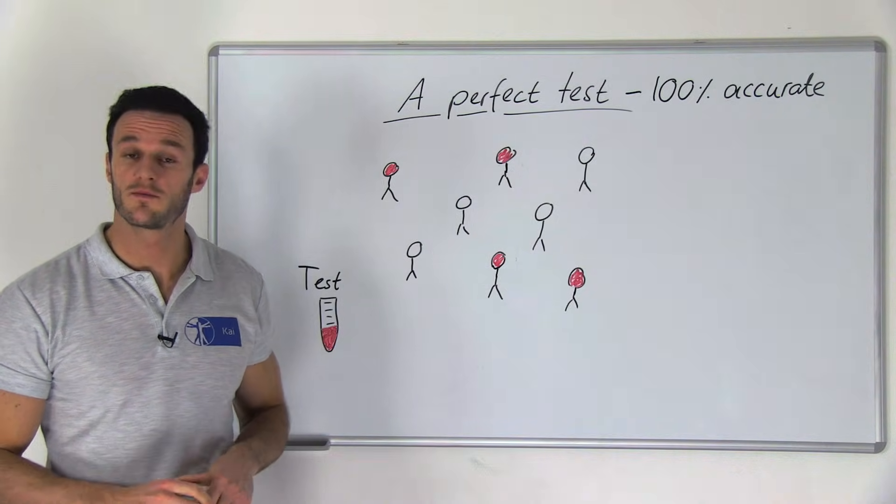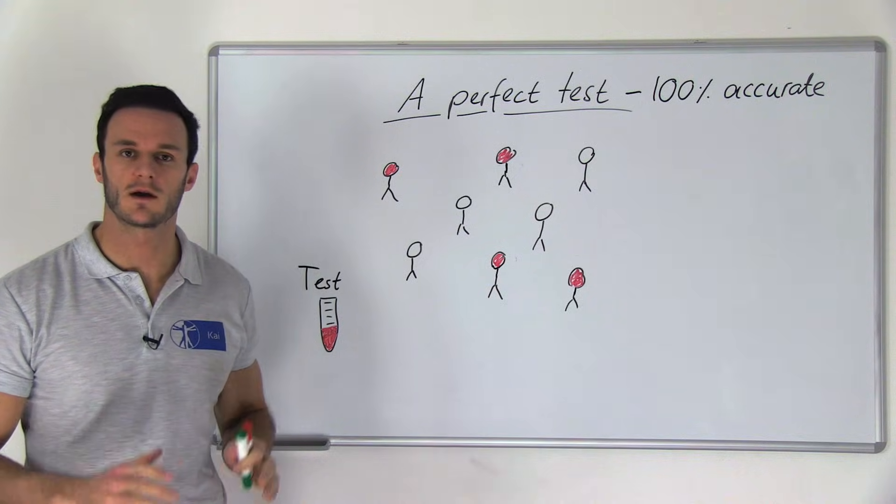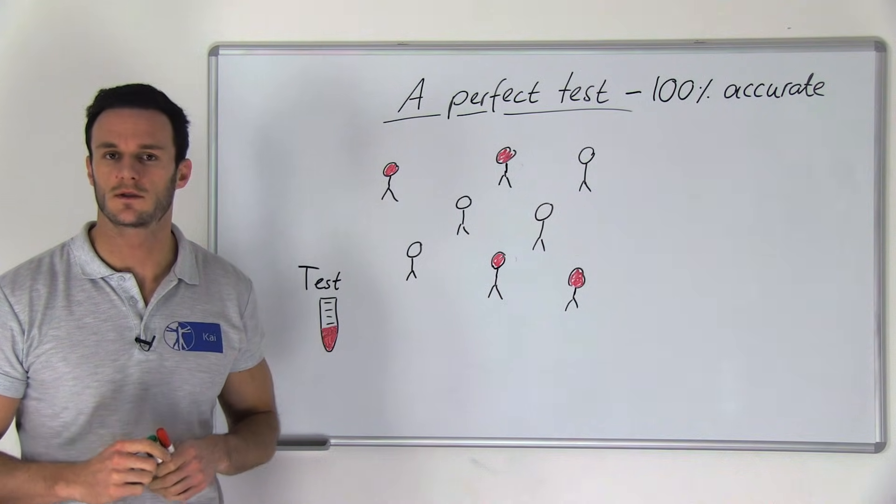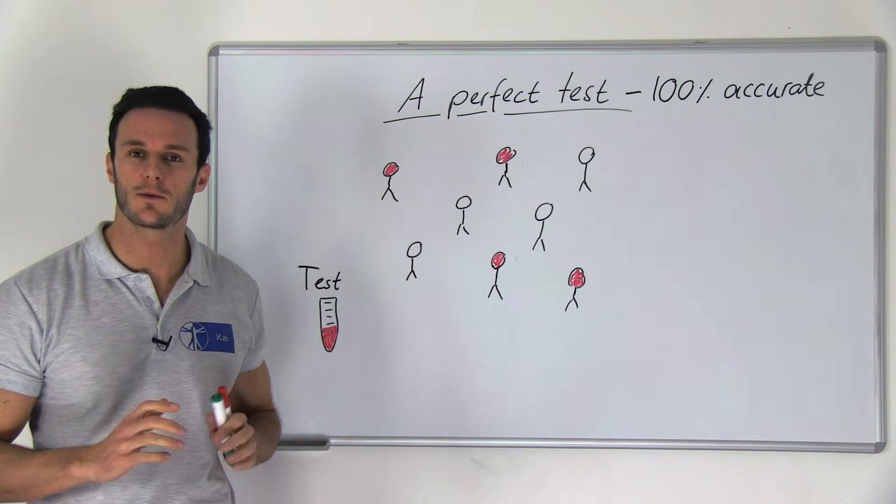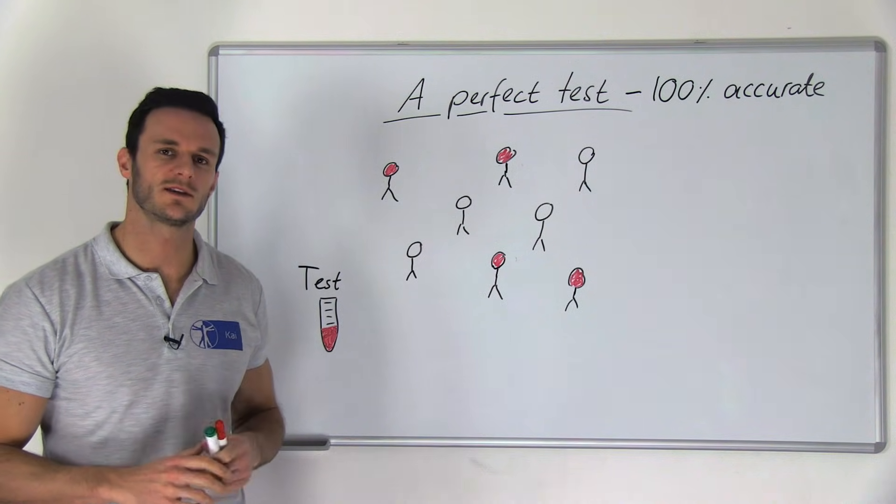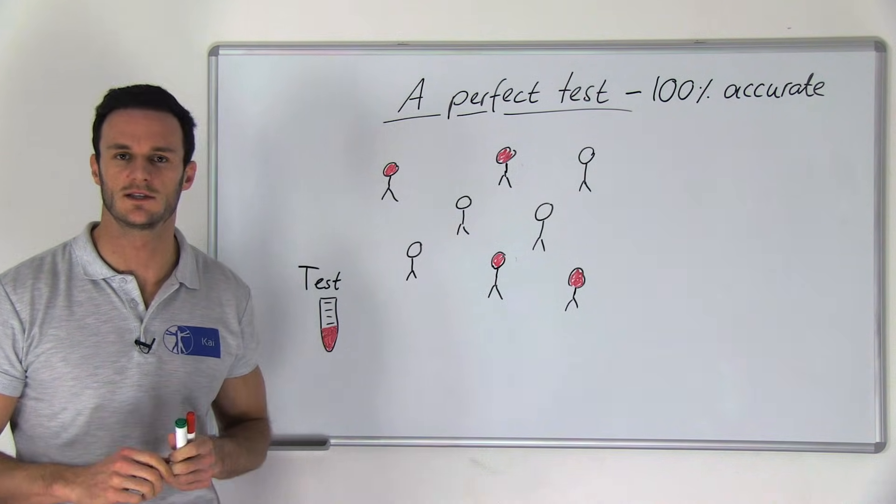Let's start with the basics. Let's imagine that we have a couple of people who have a disease marked in red and some that don't. With a perfect test we would be able to discover everyone with the disease and also detect the ones that don't have the disease.